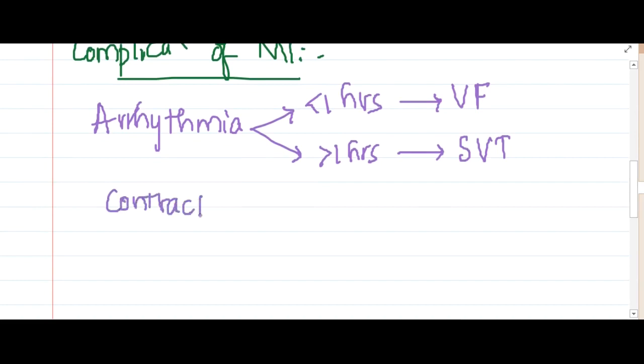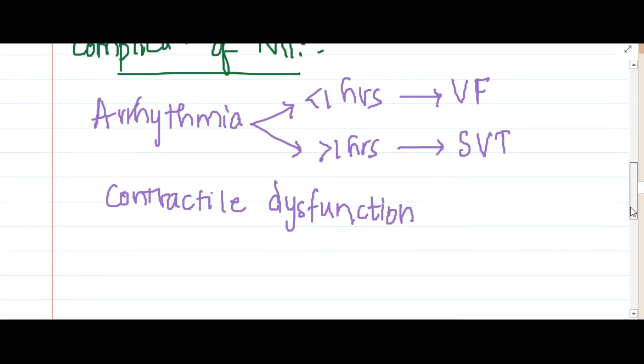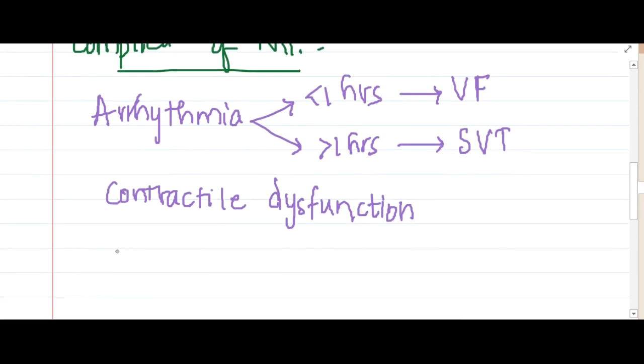The next complication is contractile dysfunction, which can occur because there is ischemia. This ischemia causes necrosis of the muscle fibers, so there is contractile dysfunction. There is also propensity to form thrombus because of ischemia and stasis.